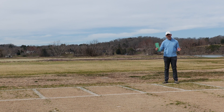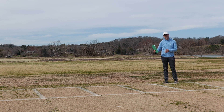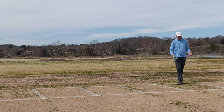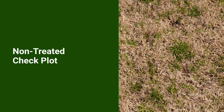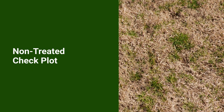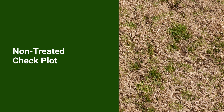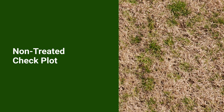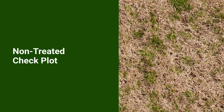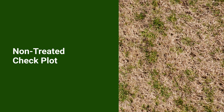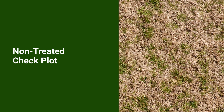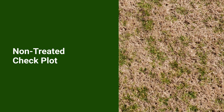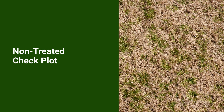For the purposes of today's video, we've highlighted a single one of those four replications to help you key in on treatment-to-treatment comparisons. The first plot I'm standing in is a non-treated check plot. You can see plenty of POA pressure here. We have this dormant canopy of hybrid bermudagrass — there's no plant competition, there's ample POA seed in the soil, and without that plant competition we have an opportunity for that seed to germinate.